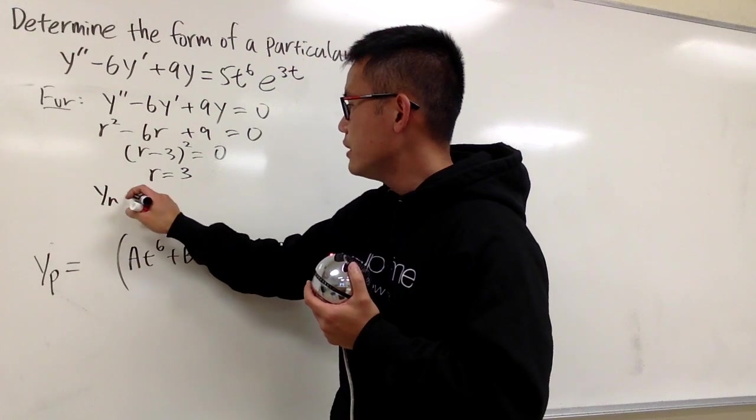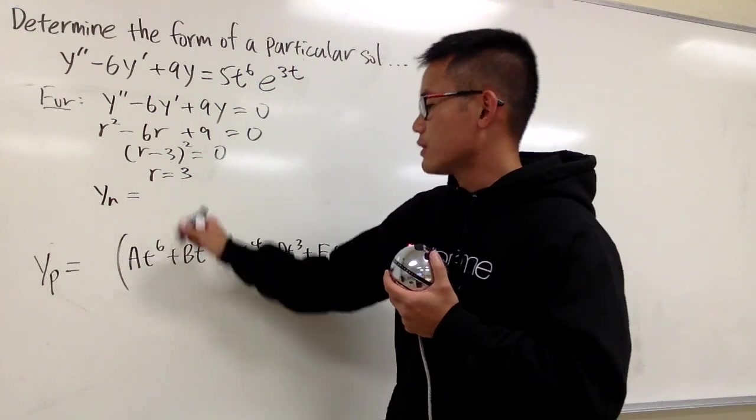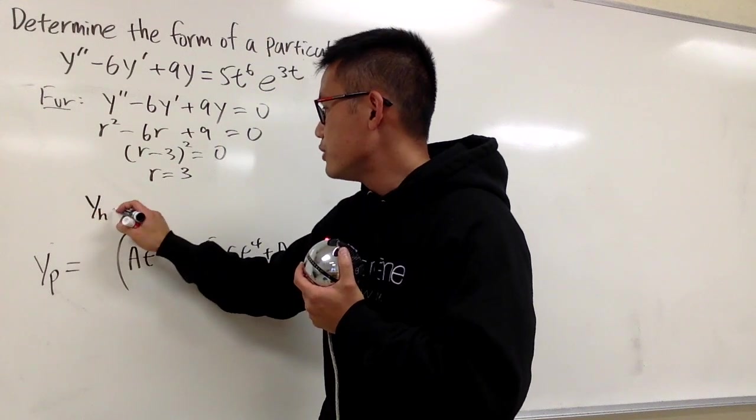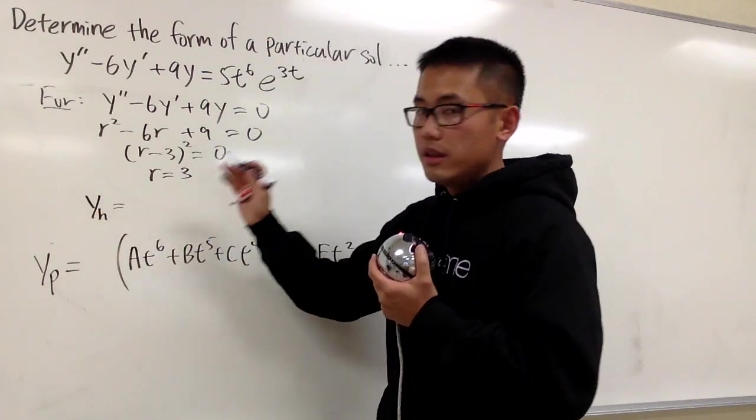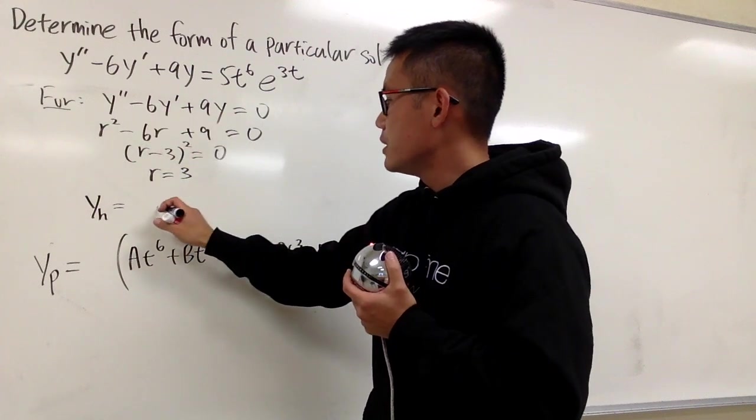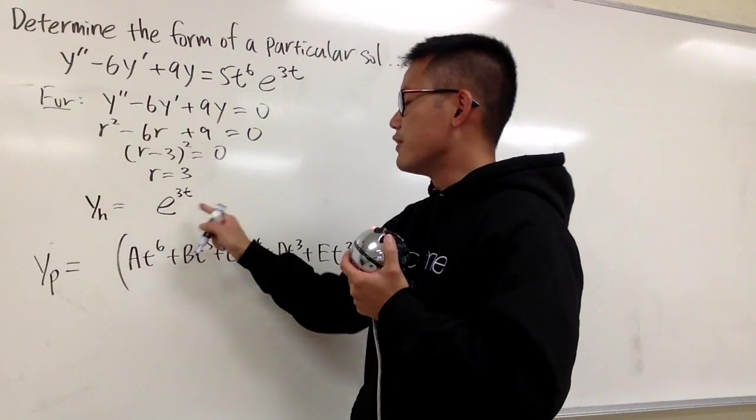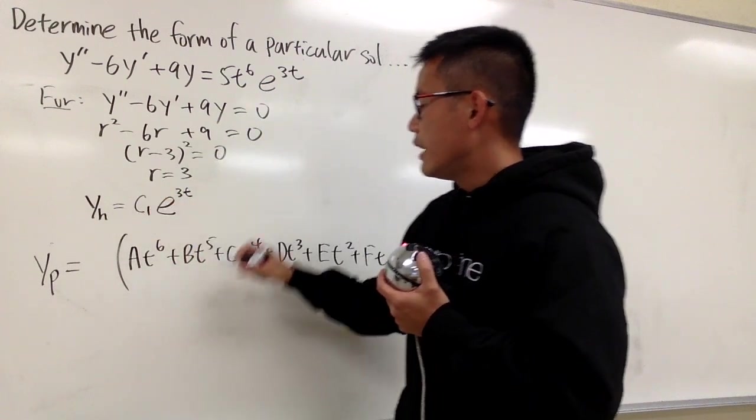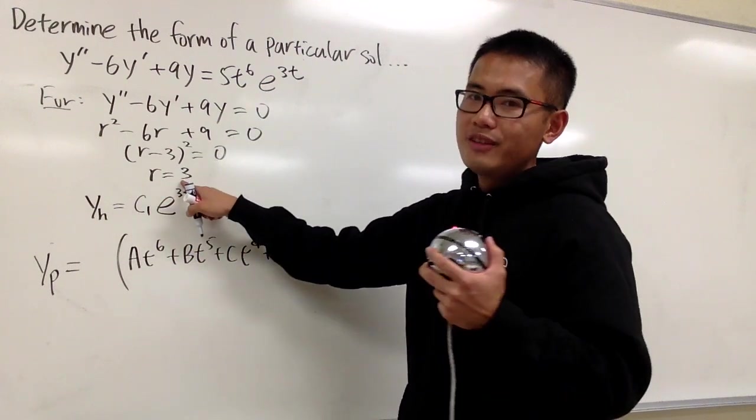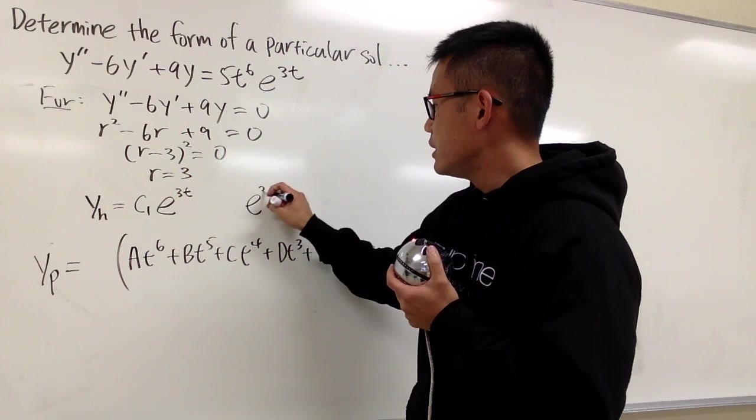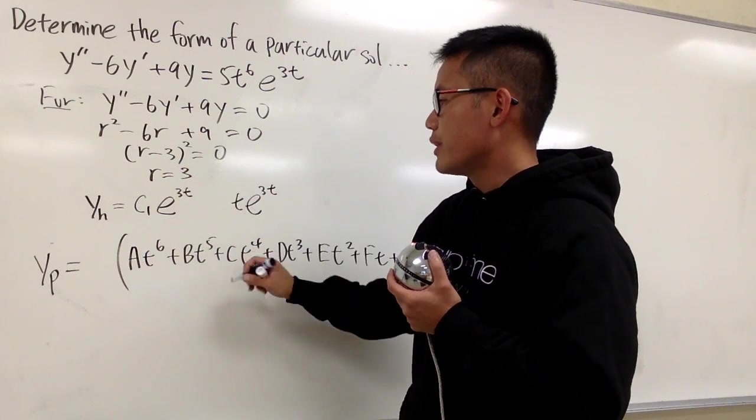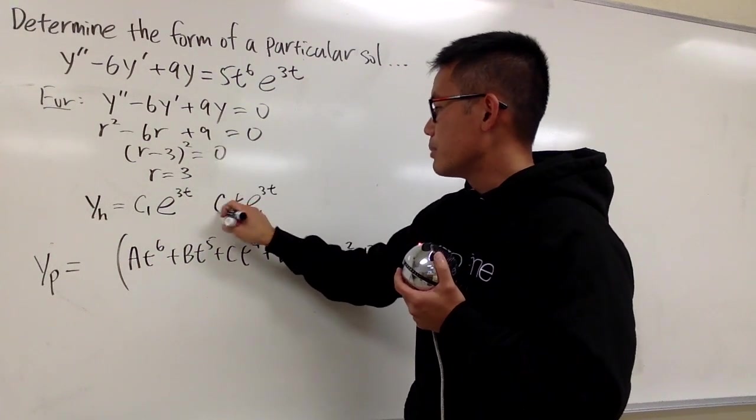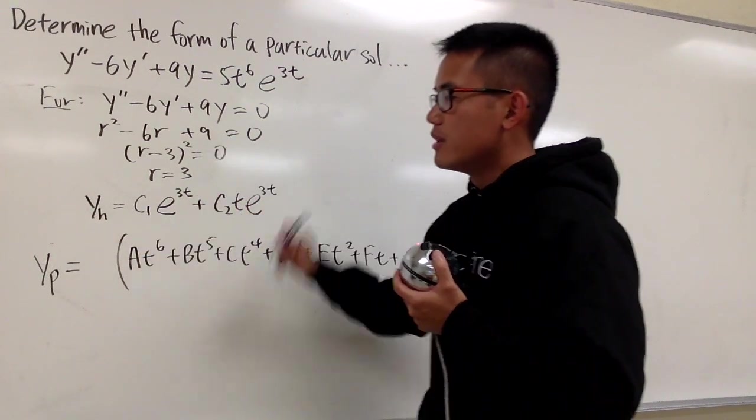So you know yh is going to be, first of all, let me just write this down better. yh is going to be, the first building block to this right here is going to be e to the 3t. This is the first building block to the solution to this. And we multiply by c1. And the second building block, well, the r has been repeated. You put down e to the 3t, and you multiply by t right here. And this is the second building block to this solution, so you multiply by c2. And then you add them all together. That's the yh.